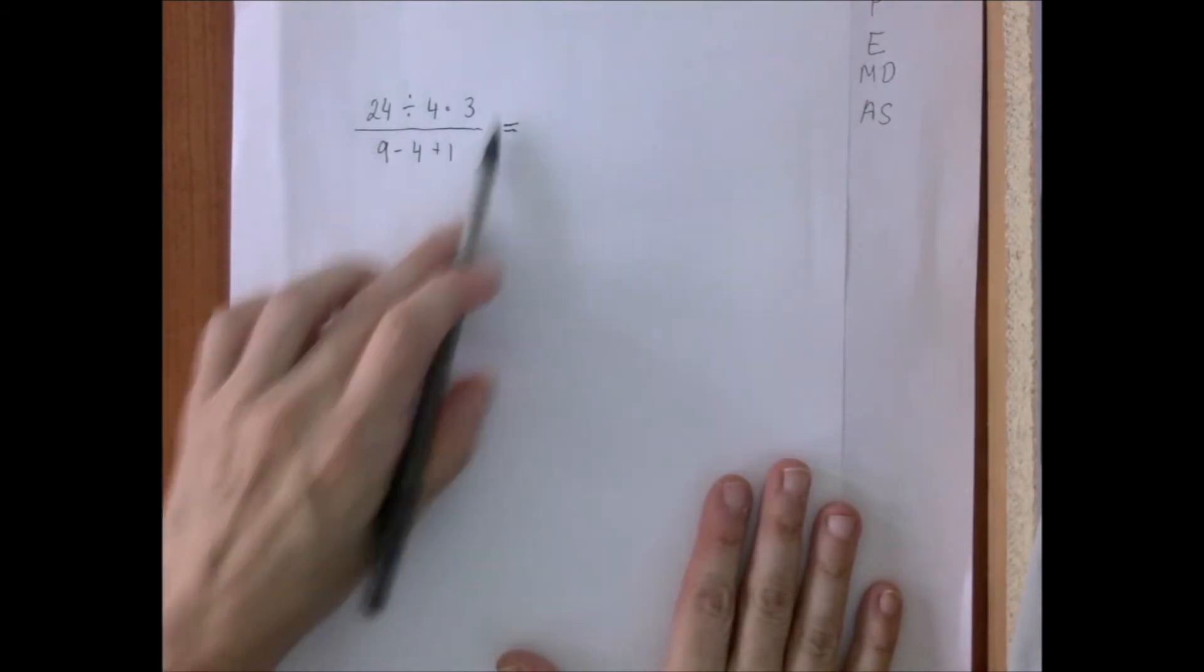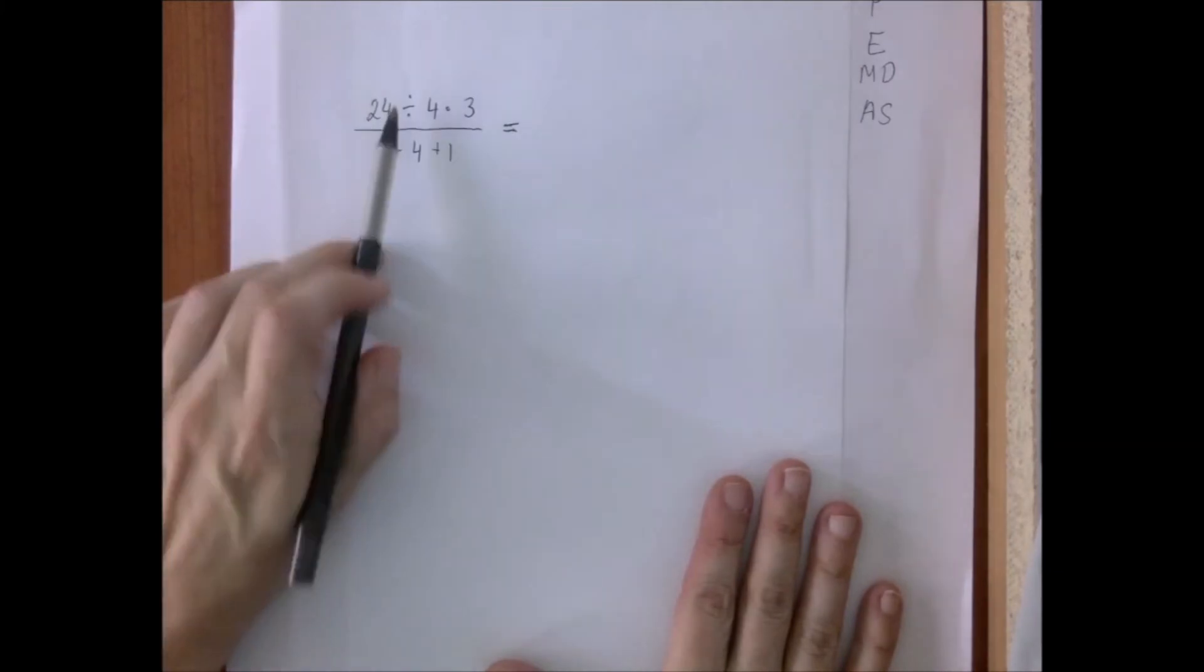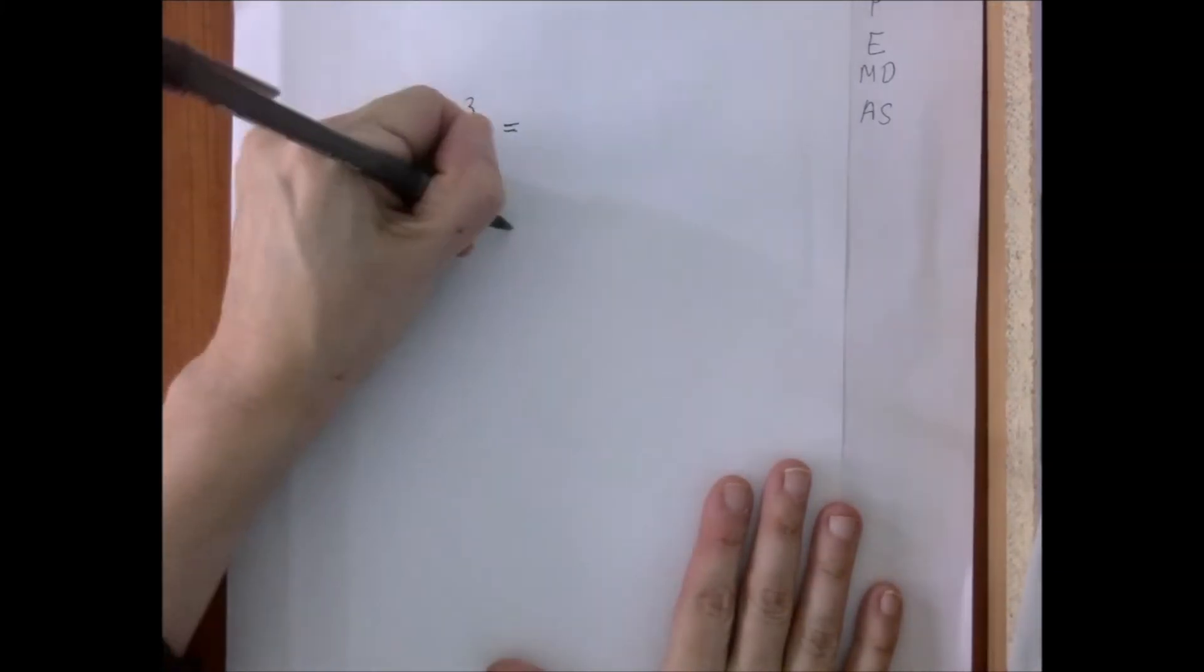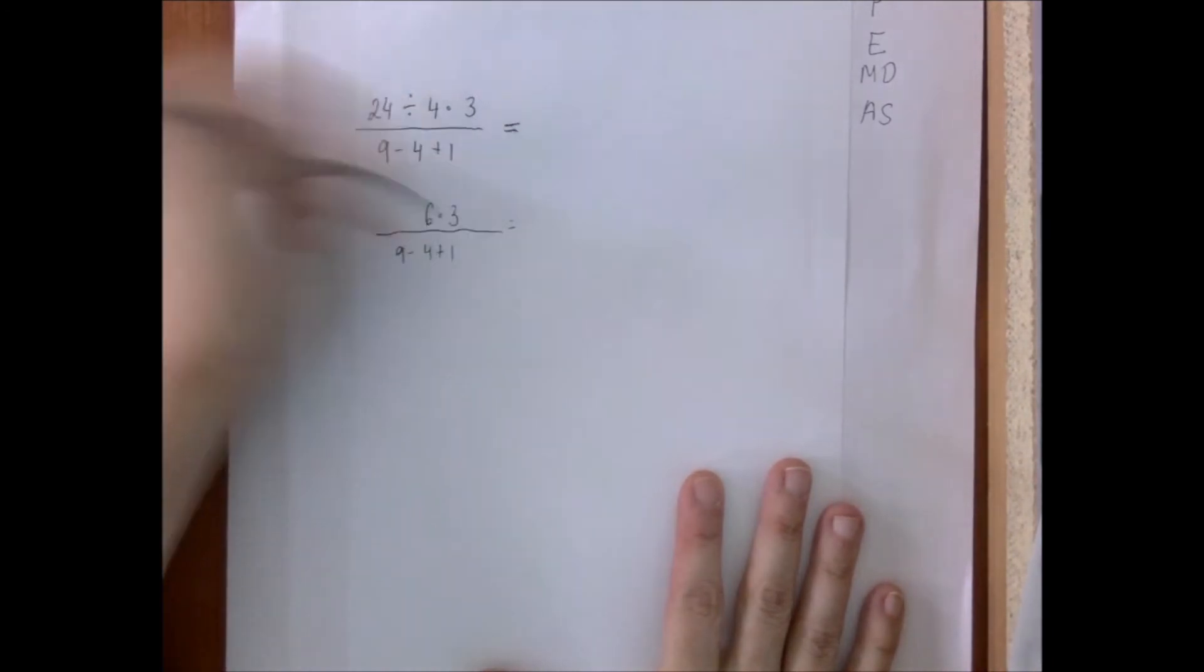So we're going to start first working on the number upstairs. We're going to go left to right between division and multiplication. So 24 divided by 4 is 6. We carry the rest.